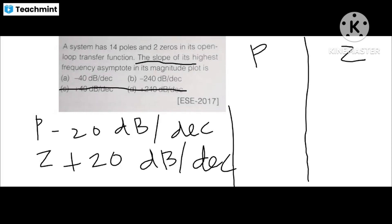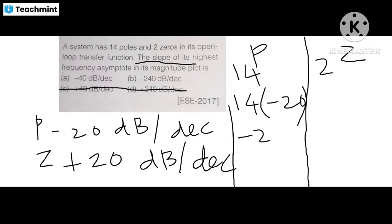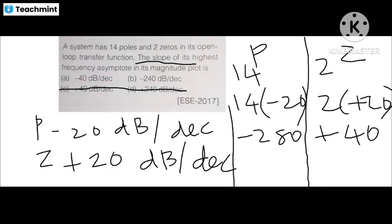Number of poles is 14, number of zeros is 2. Poles would have a slope of 14 × (−20) = −280 dB/decade. Zeros would have a slope of 2 × (+20) = +40 dB/decade. So the overall slope at the highest frequency asymptote would be −280 + 40 = −240 dB/decade. The answer is minus 240 decibels per decade. Poles have a negative slope and zeros have a positive slope — this is the key rule to remember.